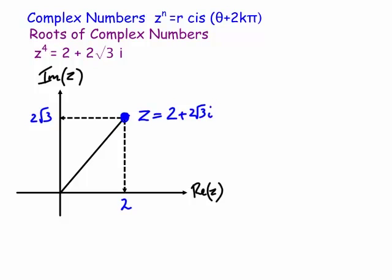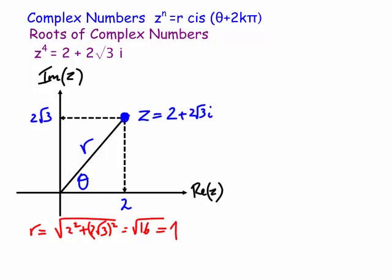First, I need to rewrite the complex number in polar form by finding the modulus r and the argument θ. The modulus r = √(2² + (2√3)²) = √16 = 4.